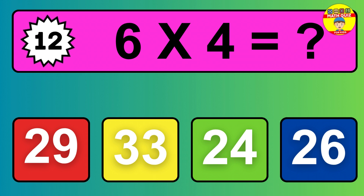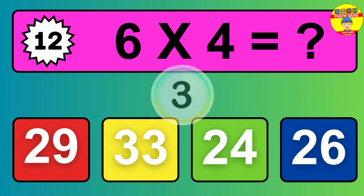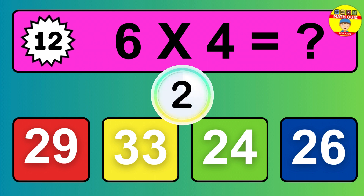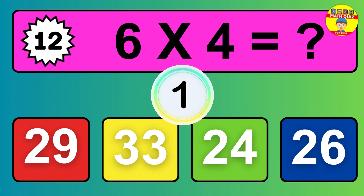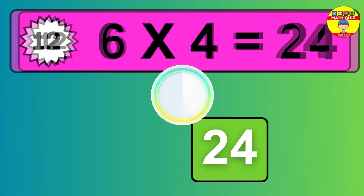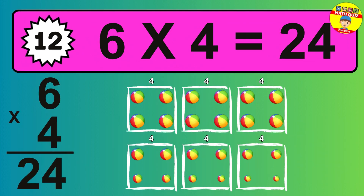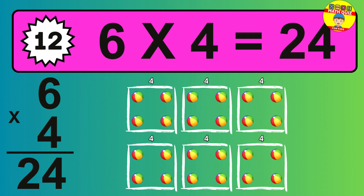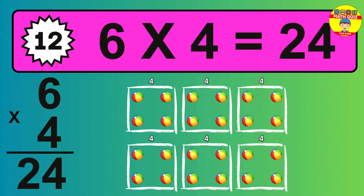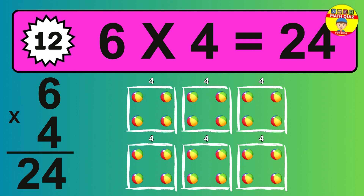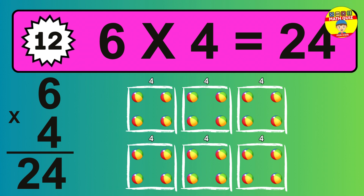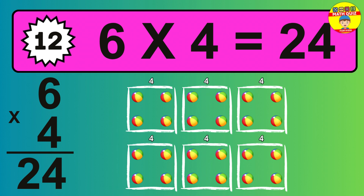Question 12. 6 times 4 equals what? The answer is 6 times 4 is 24. To calculate, we have 6 groups with 4 balls each one. So how many balls do we have? 24 balls.